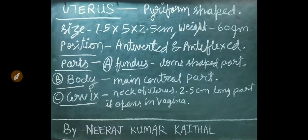The uterus is a piriform-shaped structure, size 7.5 × 5 × 2.5 cm, weight approximately 60 grams in non-pregnant state. Position of uterus is anteverted and anteflexed. Parts of the uterus: Fundus — dome-shaped part; Body — main central part; Cervix — neck of the uterus, 2.5 cm long, opens into the vagina.